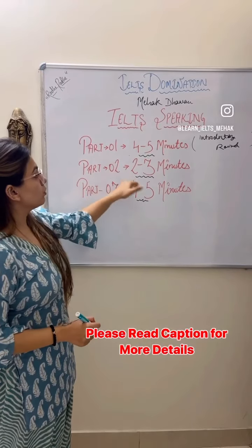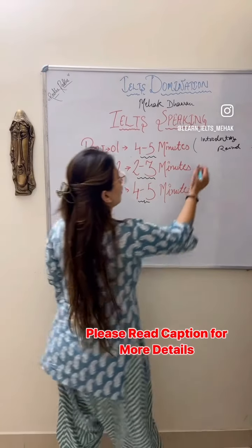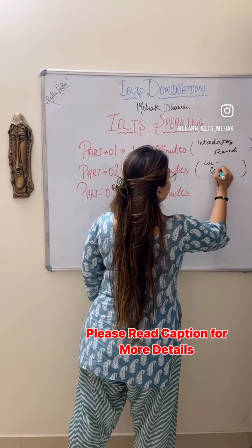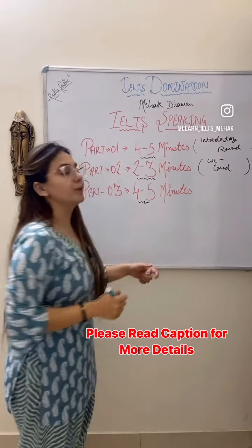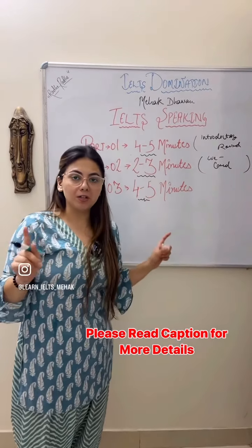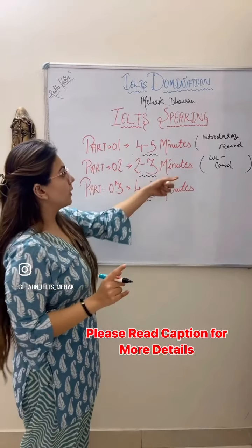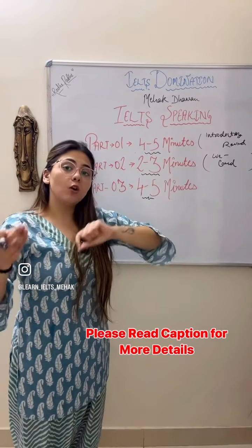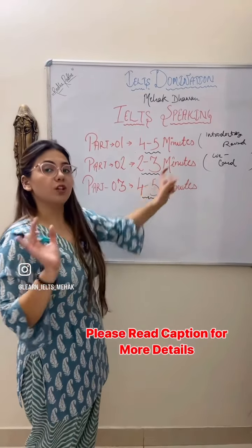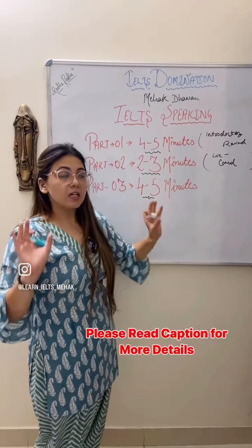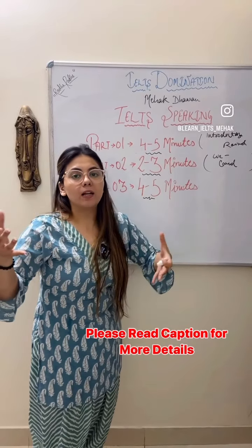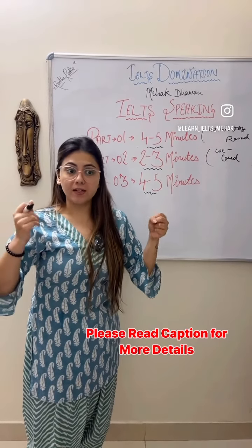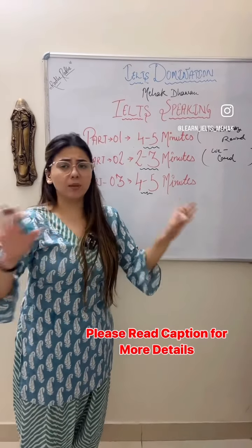Part 2 is 2 to 3 minutes — this is your cue card round. A cue card will be given to you, and you will have a pause timer of 1 minute to prepare. Then you have to speak on that cue card for a good 2 to 3 minutes. The cue card can be something like 'describe the house that you want to own' or 'describe a book that you read' — it can be anything.